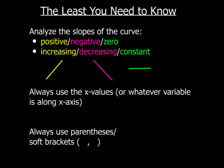All right, here's the least you need to know. You've got to analyze slopes with a curve. A positive slope will mean that a function is going to be increasing. A negative slope means that a function is going to be decreasing, and a zero slope means the function will be constant. So hopefully you can look at a picture of a slope and know when a graph is slanted upwards, downwards, or flat.